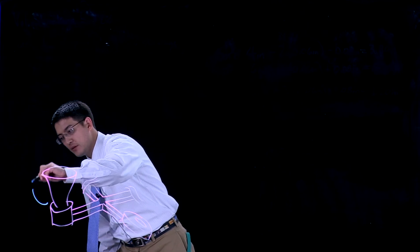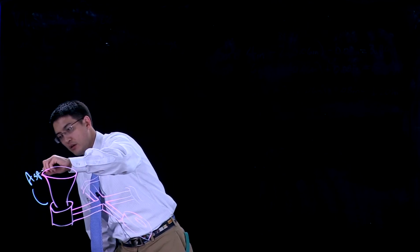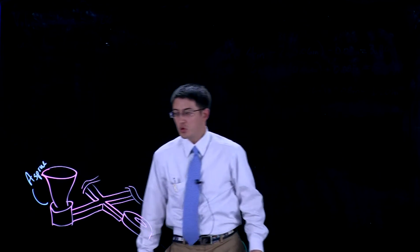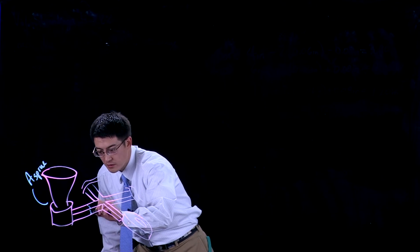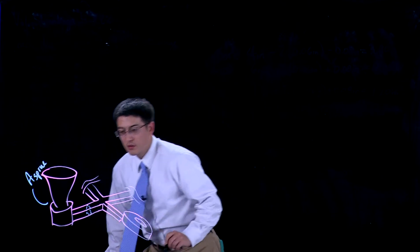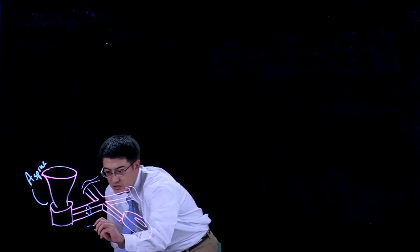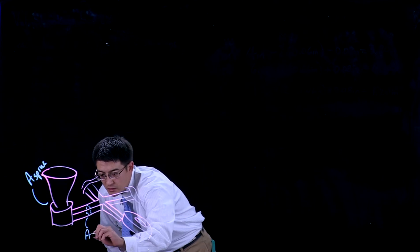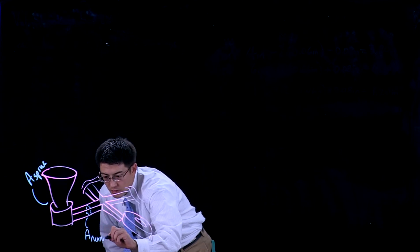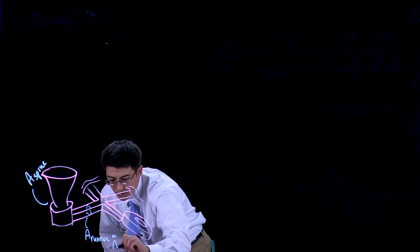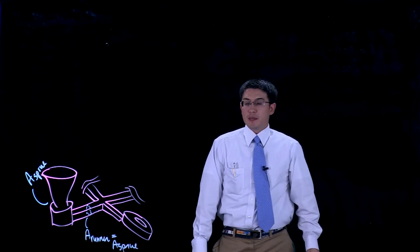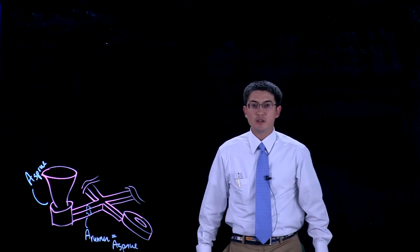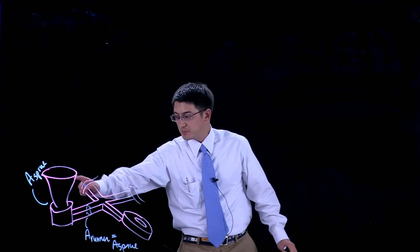We have the sprue area at the very bottom here. Initially here, the area of the cross-sectional area of this runner needs to equal the cross-sectional area of the sprue, so all the material flowing in can have the same flow rate going into the sprue.